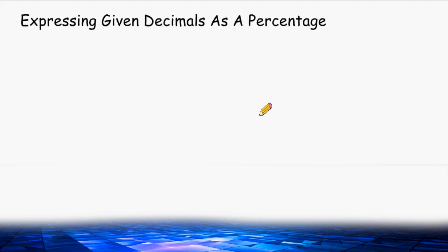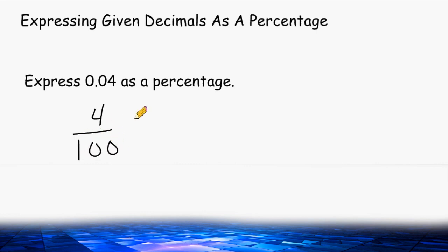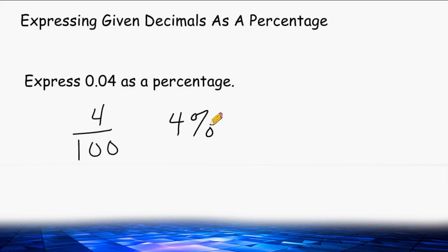Now let's do the opposite — express given decimals as percentages. Starting with 0.04: the 4 is in the hundredths place, so we can write 4 over 100. Anything out of 100 is a percentage, so if the denominator is 100, the numerator is the percentage. We simply write 4%.